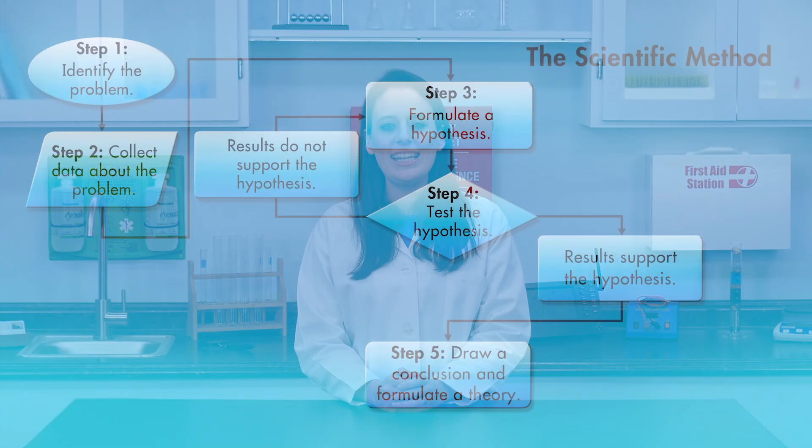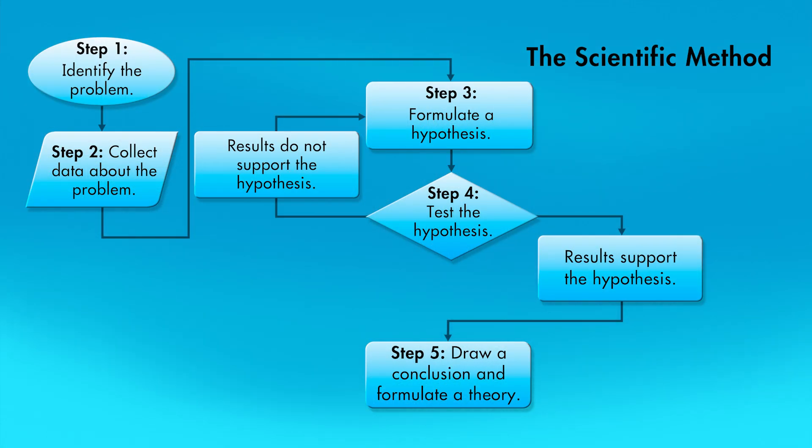Once we have determined that all the observable facts, research, and experimentation support our theory, it is time for the last step of the scientific method: communicate the results. Scientists may pass on their information verbally, or they may publish the information in a scientific journal. Communication allows other scientists to repeat the experiment and duplicate the results, which helps reinforce the theory.